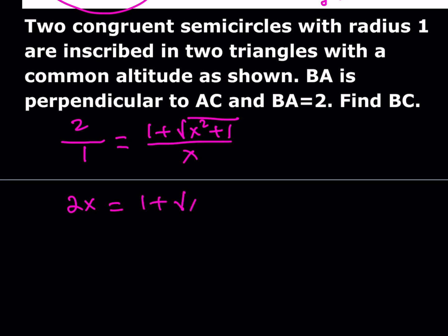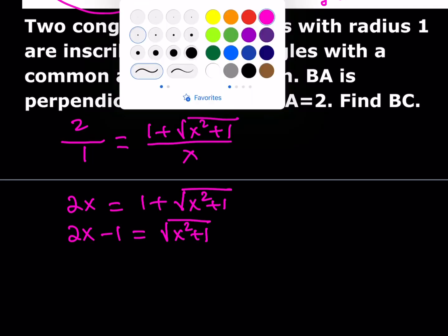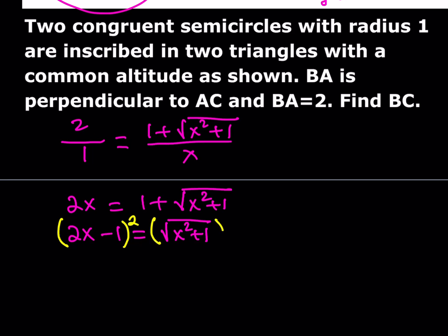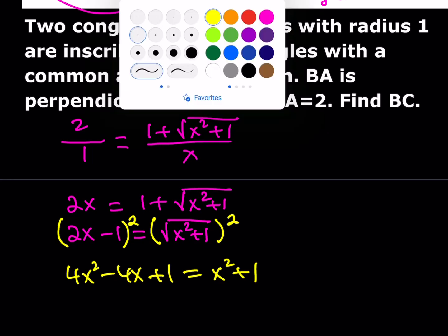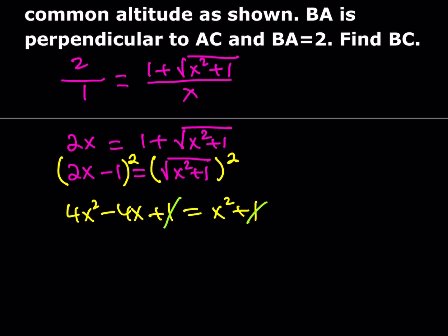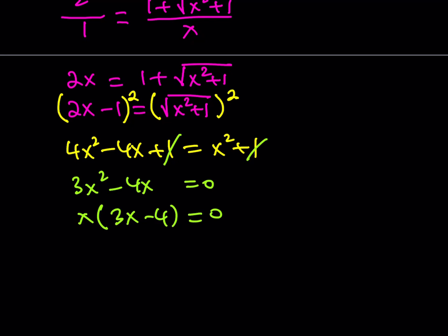2x is equal to 1 plus the square root of x² + 1. We isolate the radical first, then square both sides to get rid of it. When you square the left-hand side you get 4x² − 4x + 1, and the right-hand side is x² + 1. The 1s cancel out, giving us 3x² − 4x = 0. Pulling out x: x(3x − 4) = 0. Since x can't be 0, we get 3x − 4 = 0, which means x = 4/3.